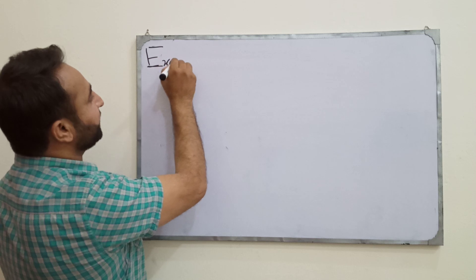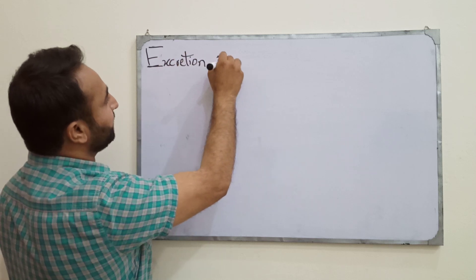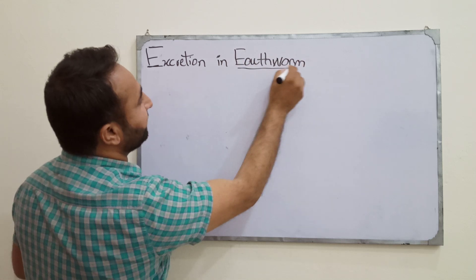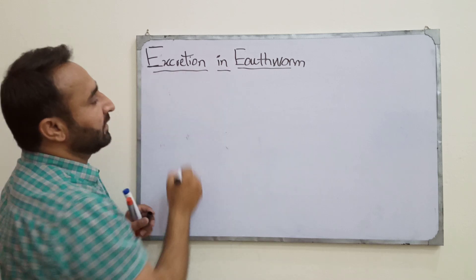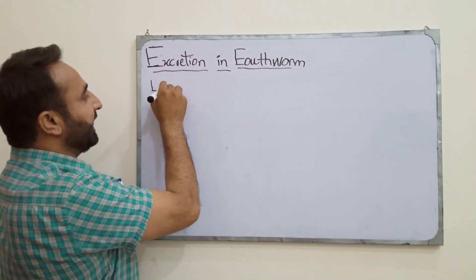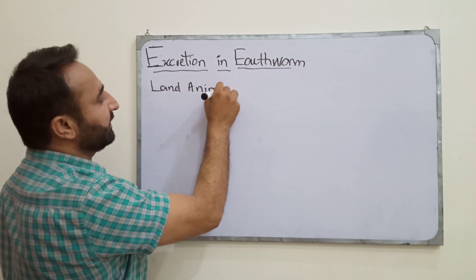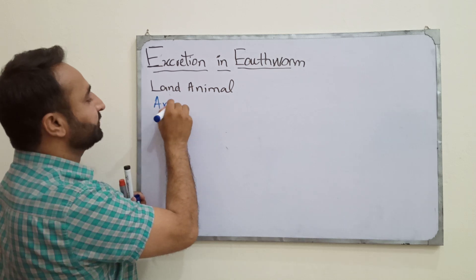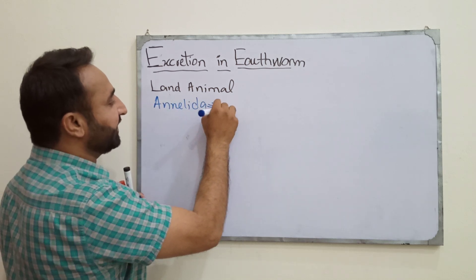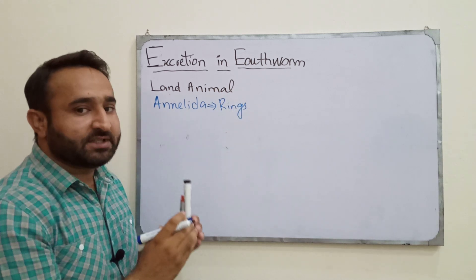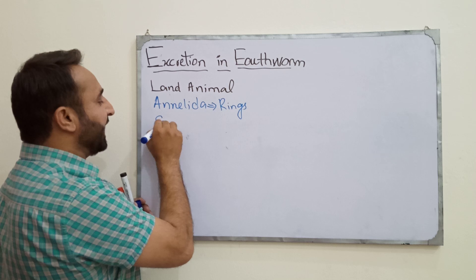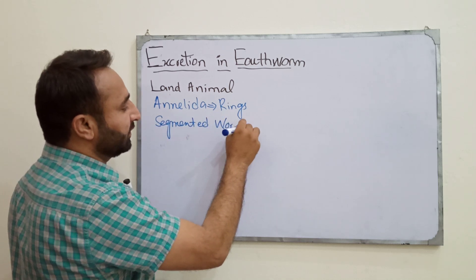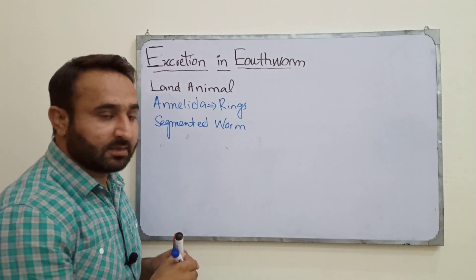First of all, what is an earthworm? As the name suggests, this is a land animal — it lives on land. It belongs to phylum Annelida. The word Annelida means rings. The bodies of annelids are divided into many segments, so they are called segmented worms.